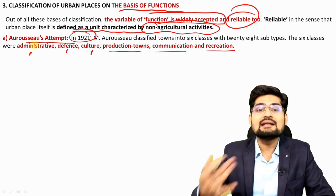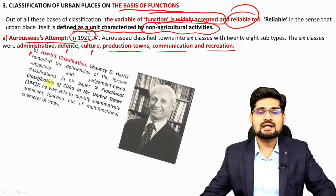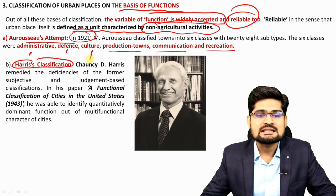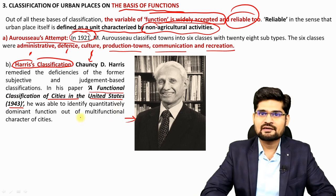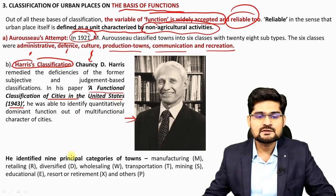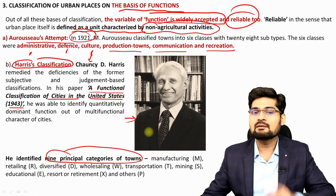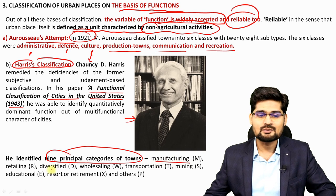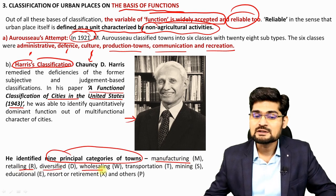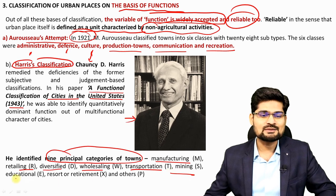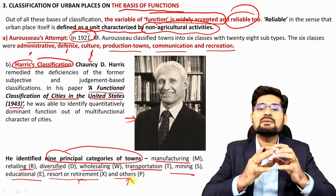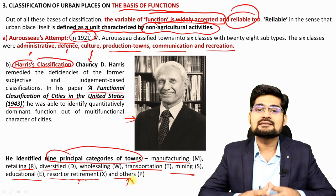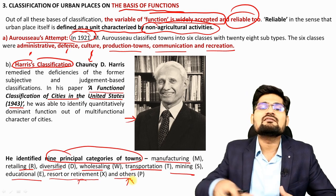The widely known functional classification at world level is C.D. Harris's classification. Chauncey D. Harris published his paper 'A Functional Classification of Cities in the US' in 1943. He talks about nine principal categories of towns: manufacturing towns, retailing towns, diversified towns, wholesale towns, transportation towns, mining towns, educational towns, resort or recreational or retirement towns, and others. These categories were utilized and applied in several other countries as well.